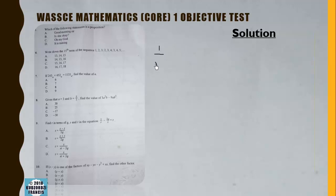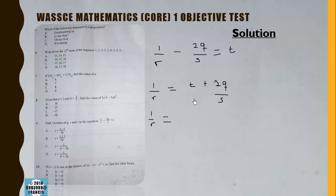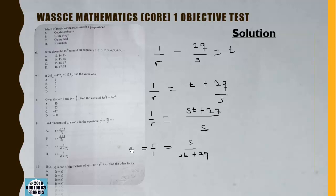We make r the subject of 1/r - 2q/s = t. Rearranging: 1/r = t + 2q/s. Collecting with LCM s: 1/r = (st + 2q)/s. Reciprocating both sides gives r = s/(st + 2q).